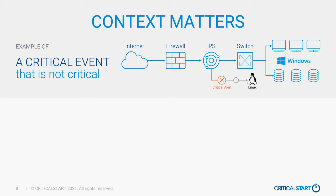An example of a critical alert that would not actually be critical due to lack of context: a Linux attack signature fires when the customer doesn't have Linux servers — say a brand new Linux zero-day, remote code execution, root privileges, SSH externally exposed. The IPS vendor writes a new signature, we escalate to the customer, wake up the security director at 2 a.m., and he's not happy because his DMZ only has Windows servers. Understanding that customer's network context helps us realize critical priority at an alert level does not mean critical priority at an incident level.